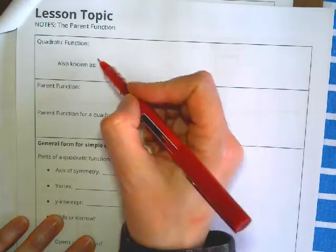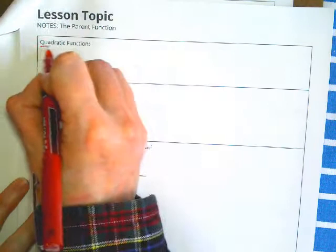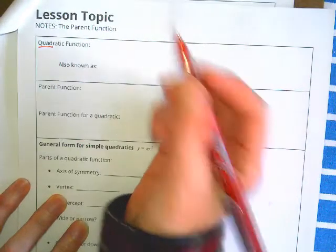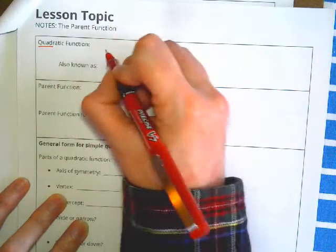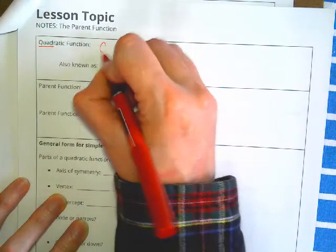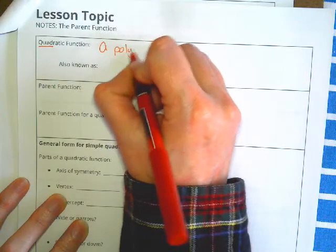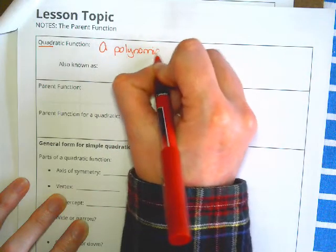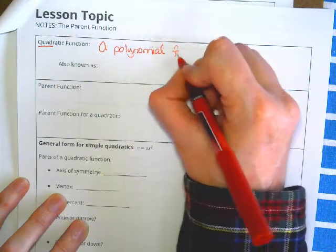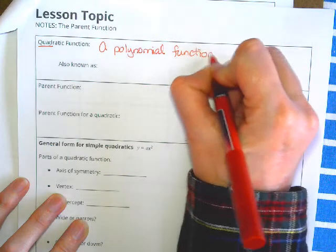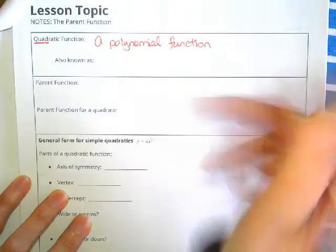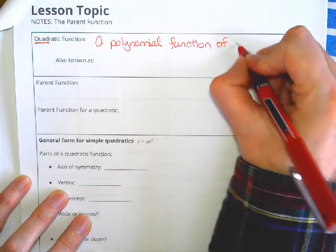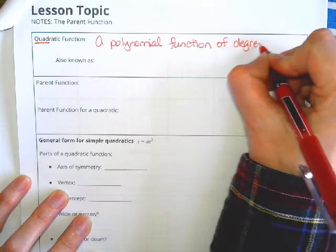So a quadratic function, remember a quad means square in Latin. A quadratic function is a polynomial function, of course, meaning it passes the vertical line test of degree two.